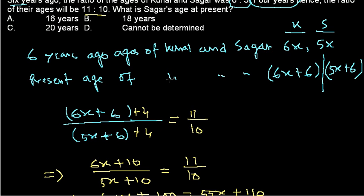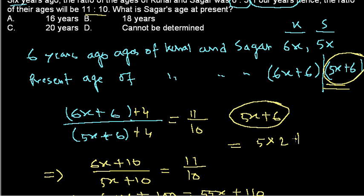So what is asked in the question? What is Sagar's age at present? So Sagar's age at present, remember this is the present age: Sagar's age at present is 5X plus 6. This is the age of Sagar at present. So let's put the value of X here. Value of X is 2, so you put it here: 10 plus 6, so it will be 16 years.